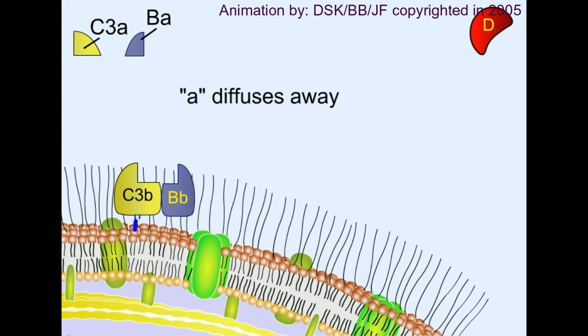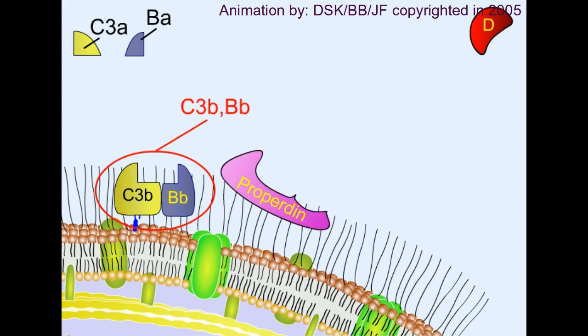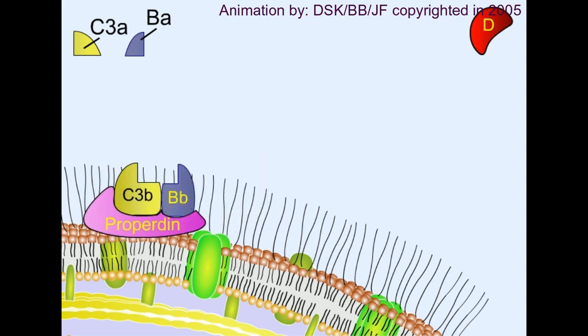So A diffuses away, B stays there. By this same fashion, this C3b-Bb complex acts as a C3 convertase, and this complex is stabilized by another protein called properdin. So that is a stabilized C3b-Bb complex.